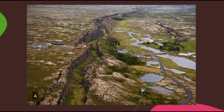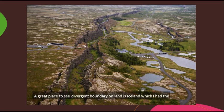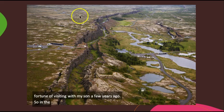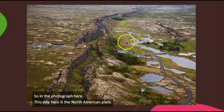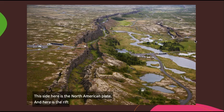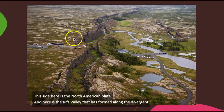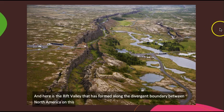This rock is then split in two as each plate moves away. A great place to see a divergent boundary on land is Iceland, which I had the good fortune of visiting with my son a few years ago. So in the photograph here, this side here is the North American plate.